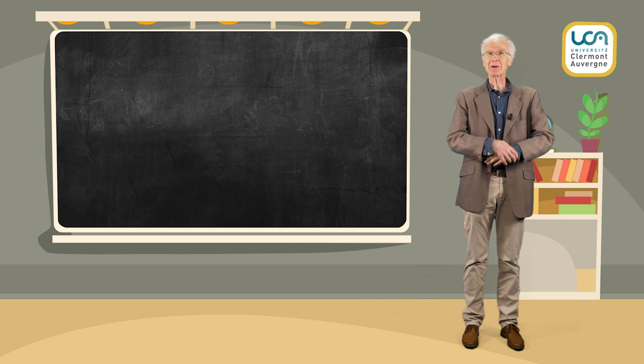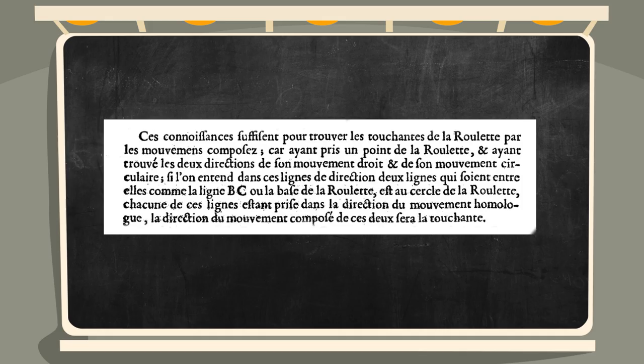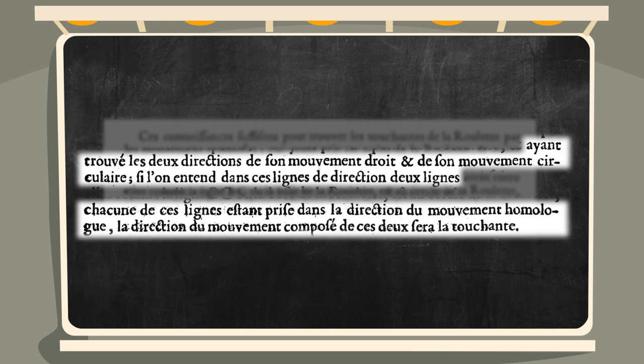Après ces explications, voici le texte de Roberval, qui peut-être va vous sembler plus clair maintenant. Ayant pris un point de la roulette et ayant trouvé les deux directions de son mouvement droit et de son mouvement circulaire, si l'on entend dans ces lignes de direction deux lignes, chacune étant prise dans la direction du mouvement homologue, la direction du mouvement composé de ces deux sera la touchante.